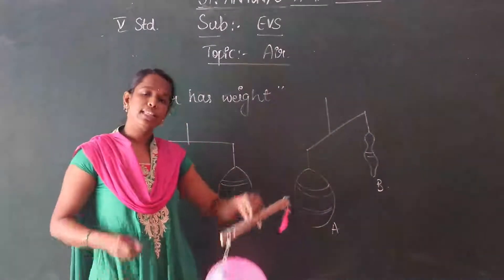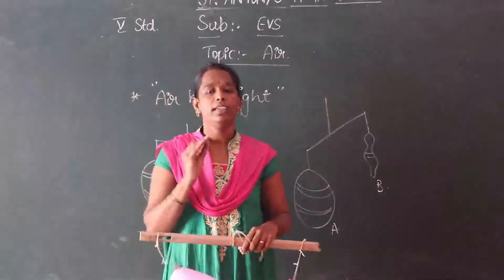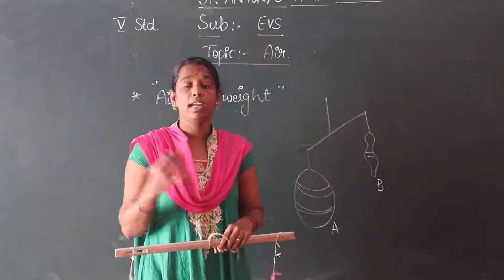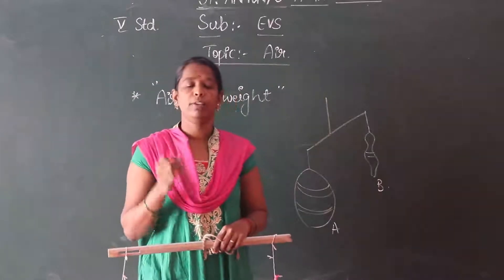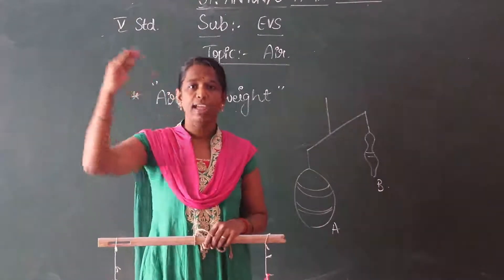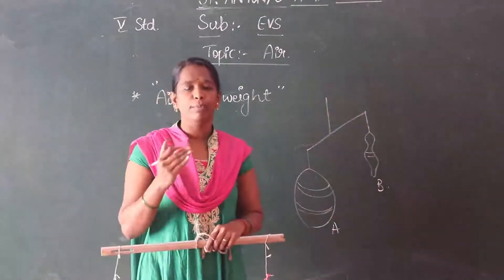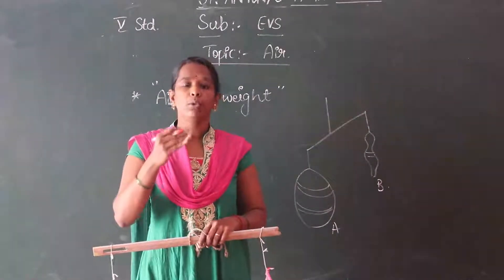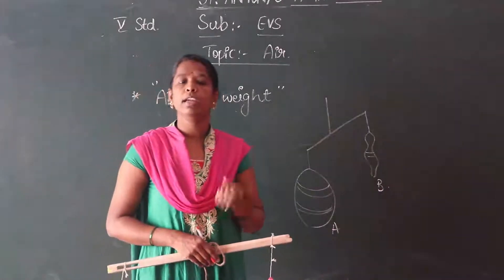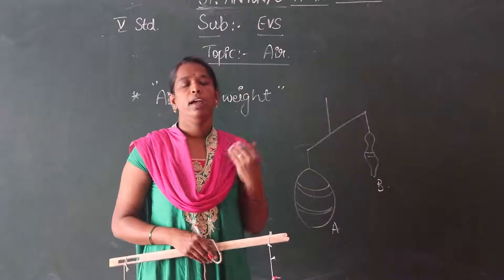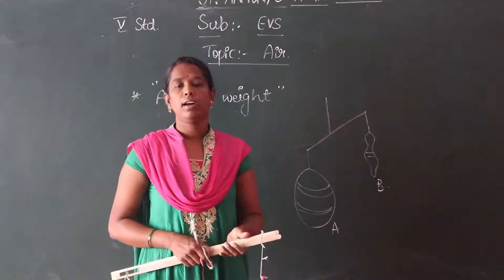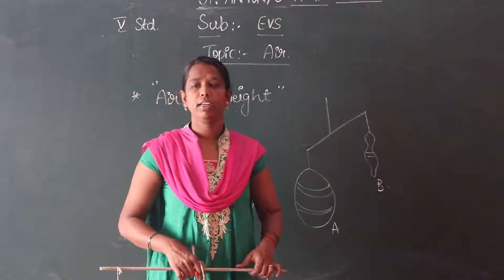In this experiment, we conclude that air has weight. We feel air when we go to the terrace — it pushes us. When there is heavy wind, it pushes things. Kites fly in the air, and sailing boats also move with the help of air. These are the uses of air. Air is used in sailing boats, windmills, and kites fly with the help of wind.